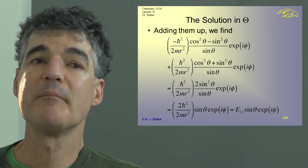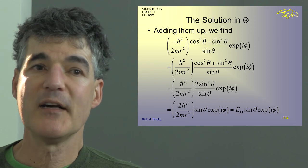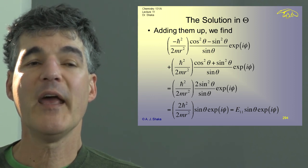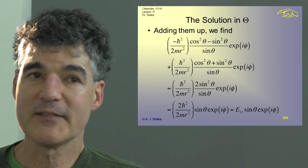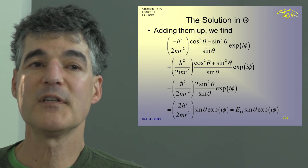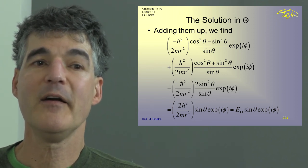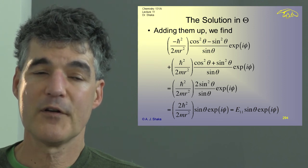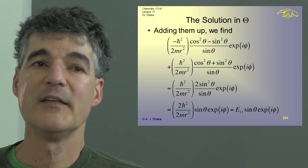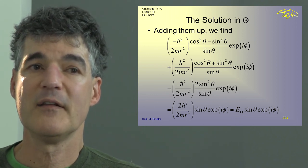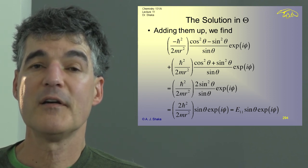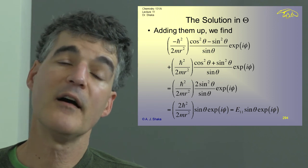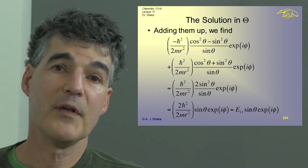If we add the two terms up — we had cosine squared theta minus sine squared theta over sine theta, and then cosine squared theta plus sine squared theta over sine theta — the cosine squared goes away and the sine squared adds up. We end up with 2 sine squared theta divided by sine theta, which simplifies to 2 sine theta. So we end up with 2 H-bar squared over 2MR squared times sine theta times E to the i phi equal to the energy times sine theta times E to the i phi.